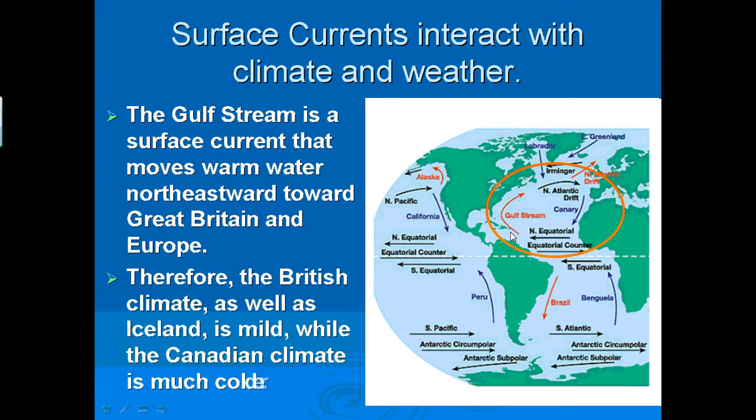This current, this warm current, is going to make the climate and the air warmer so that Great Britain and Iceland have a mild climate, which means not cold. And Canada, which is right here, is going to have a colder climate because it's not getting that warm weather coming from that Gulf Breeze. So basically our currents are going to also affect our weather.